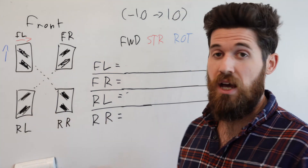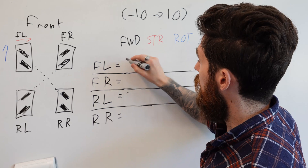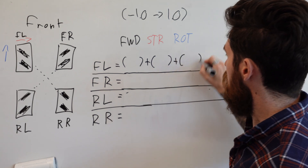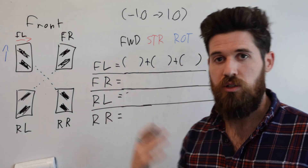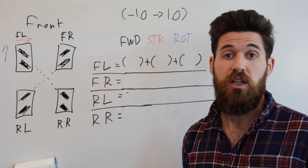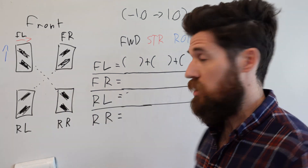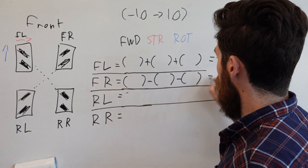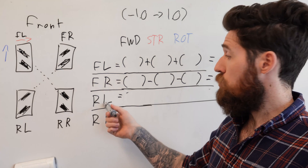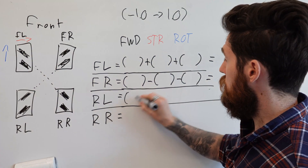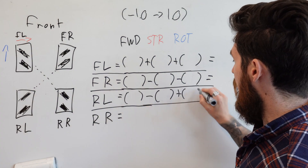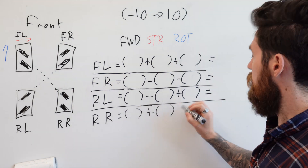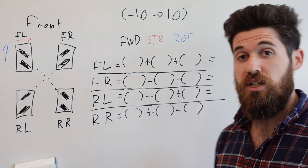For our front left motor, we simply add all three values together: forward plus strafe plus rotation equals the front left motor output. For our front right motor, we take forward minus strafe minus rotation. For our rear left motor, we take forward minus strafe plus rotation. And for our rear right motor, we take forward plus strafe minus rotation.